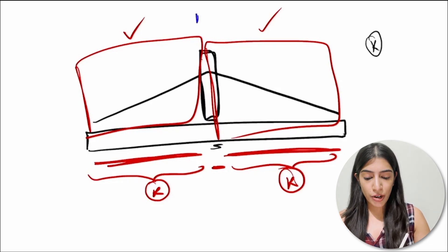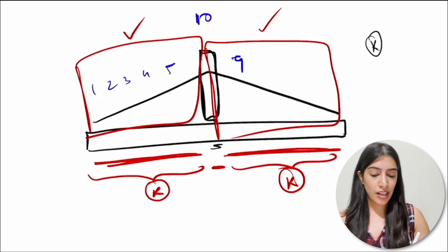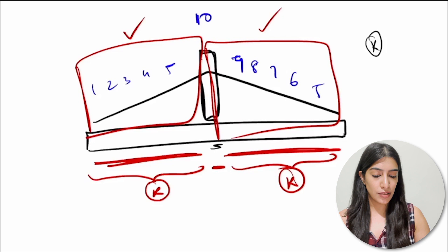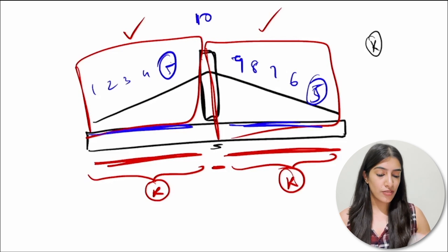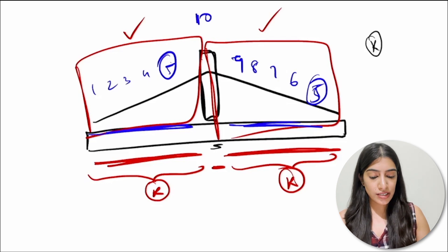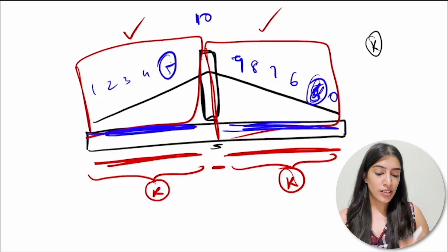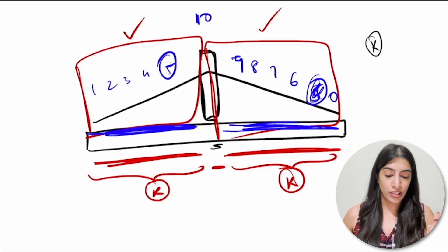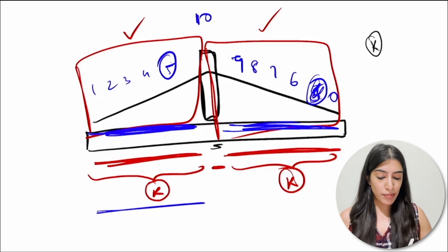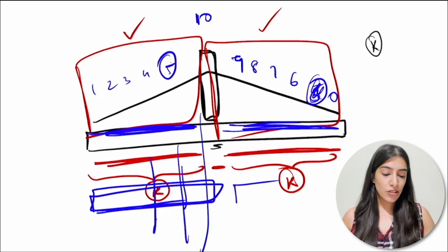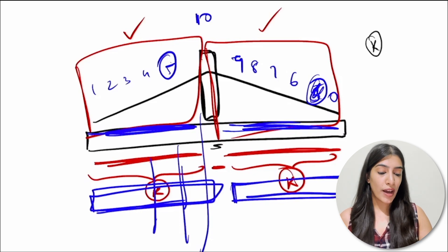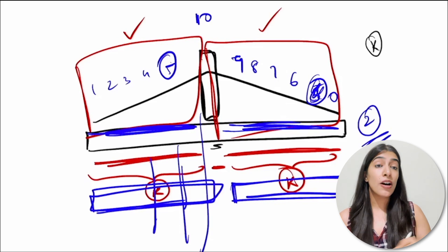Say the bitonic point is 10, with elements 1, 2, 3, 4, 5 on the left and 9, 8, 7, 6, 5 on the right. If you are looking for element 5, it can exist on both halves. Even with distinct elements, a value like 0 could exist on either the left or right side — you cannot be sure. That is why you apply binary search on each half independently, dividing each half repeatedly until you find the element.